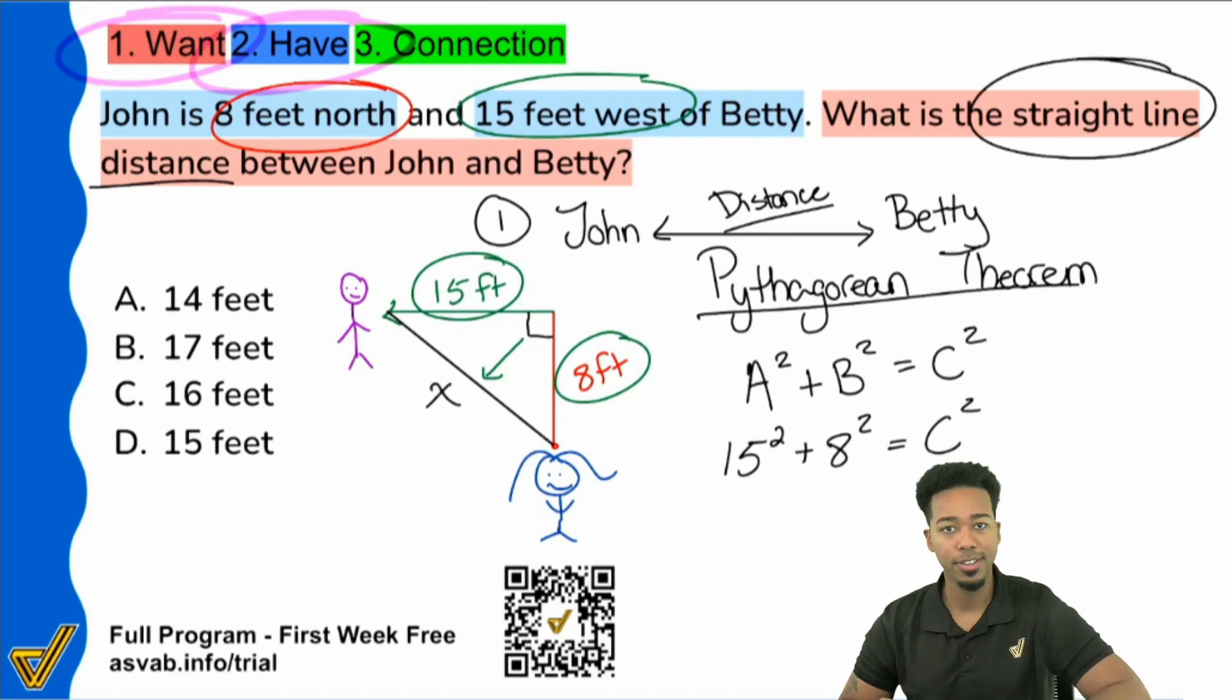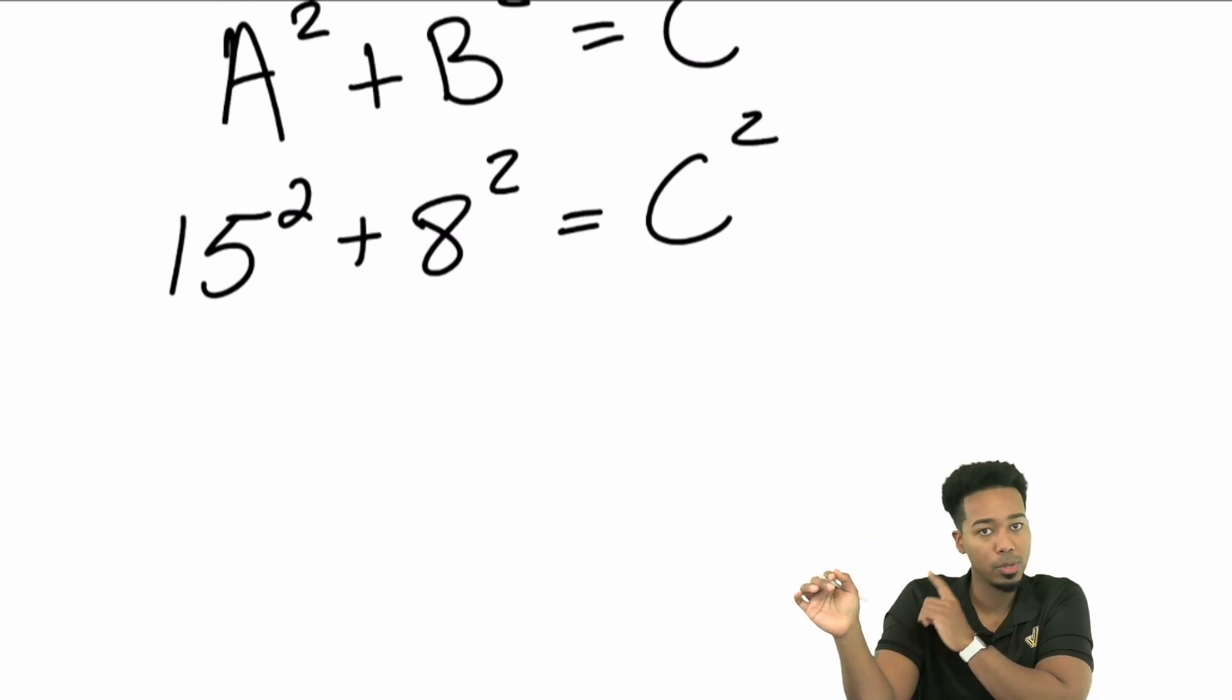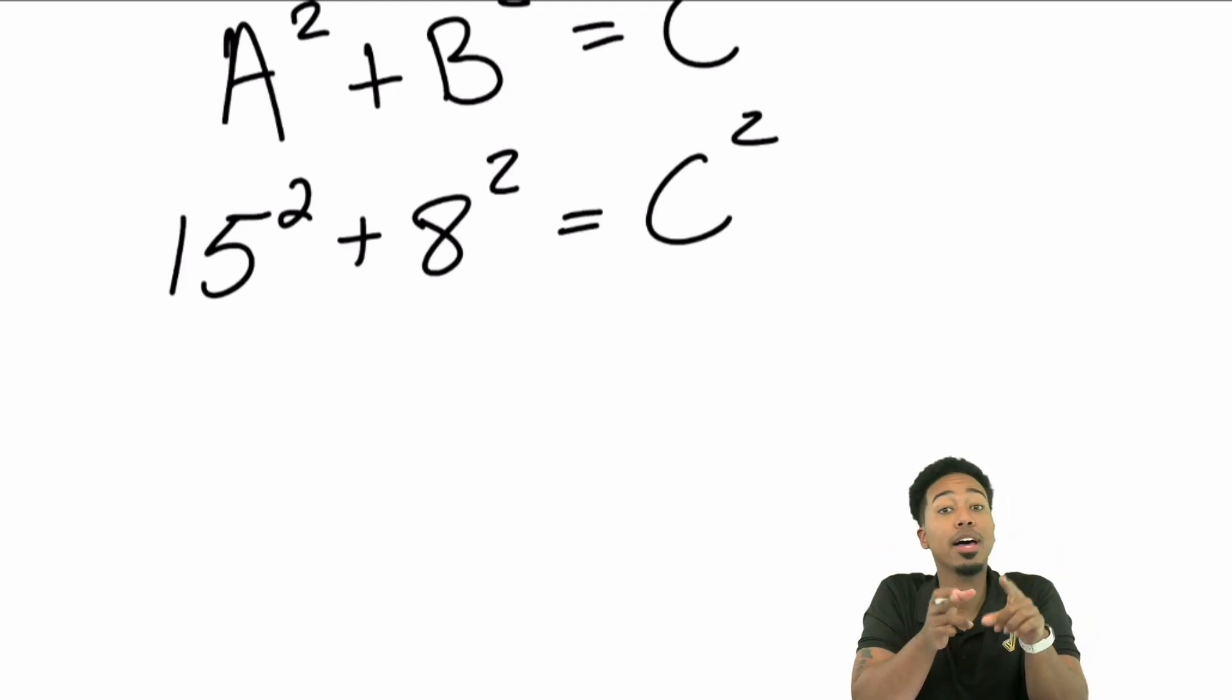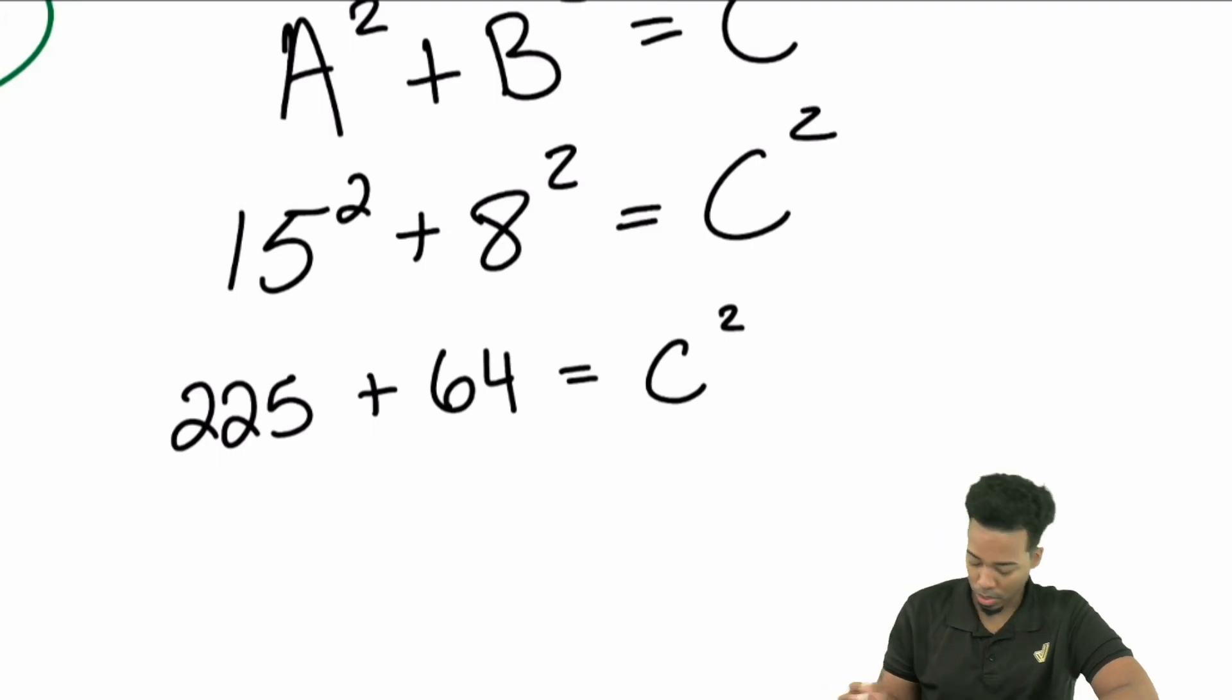Now all I have to do is solve this. This is actually pretty straightforward. Once you set up the formula, just solve. 15 squared - remember that anything squared is that number multiplied by itself. So 15 squared is 15 times 15, which would be 225. What is eight squared? That's eight times eight, which is 64. And that's going to be c squared. Now we're going to add 225 plus 64, and that's going to end up being 289 equals c squared.